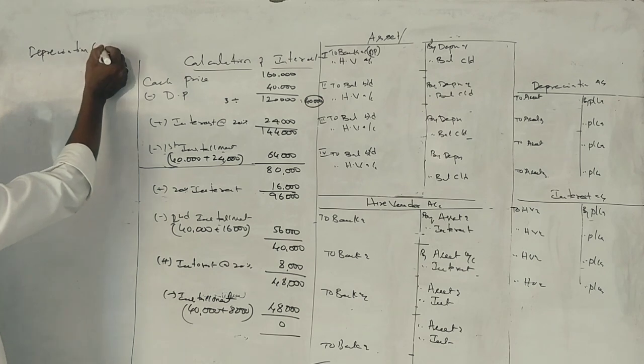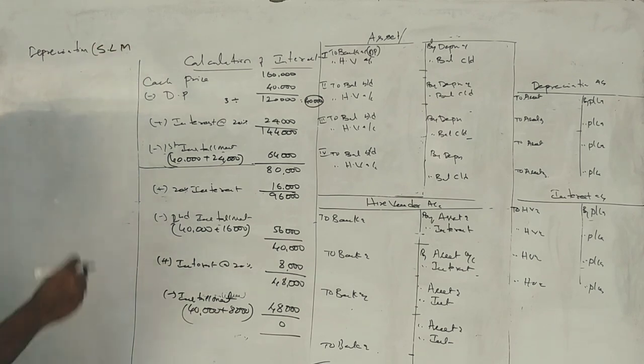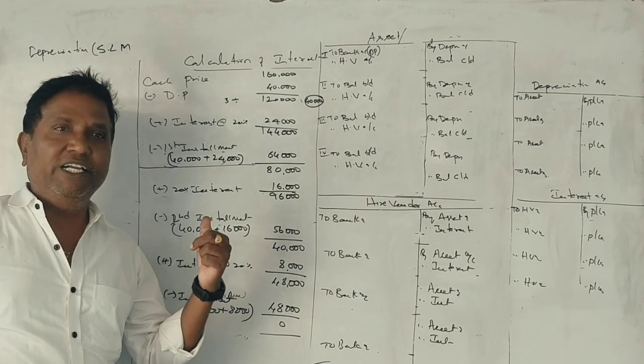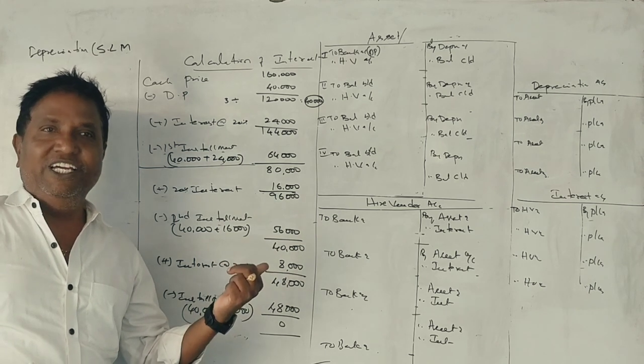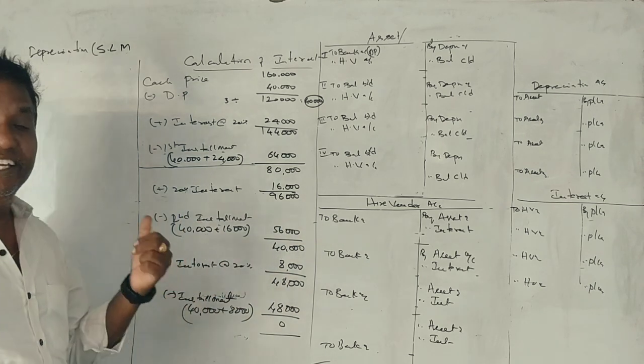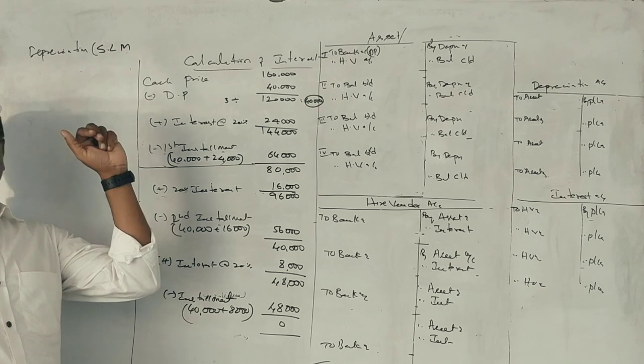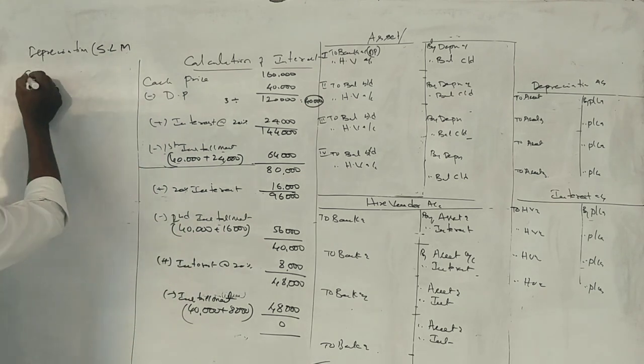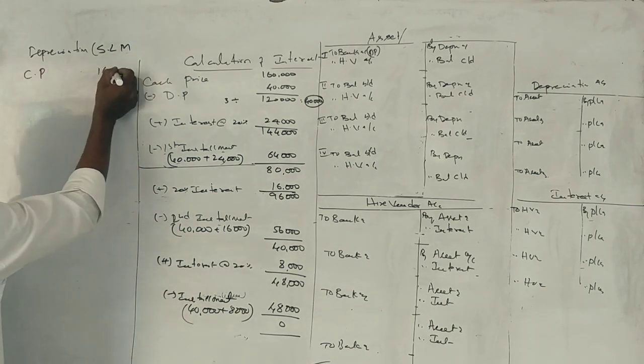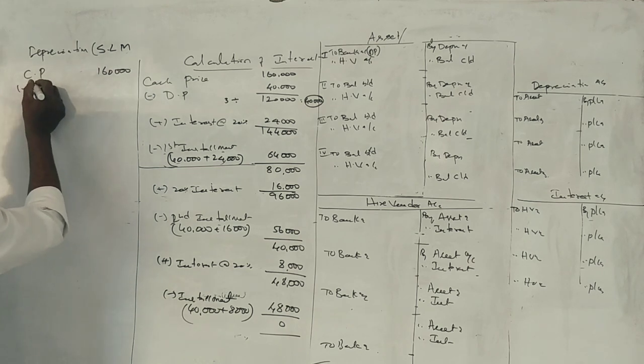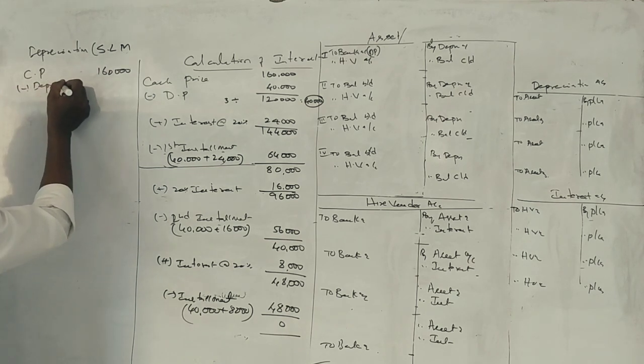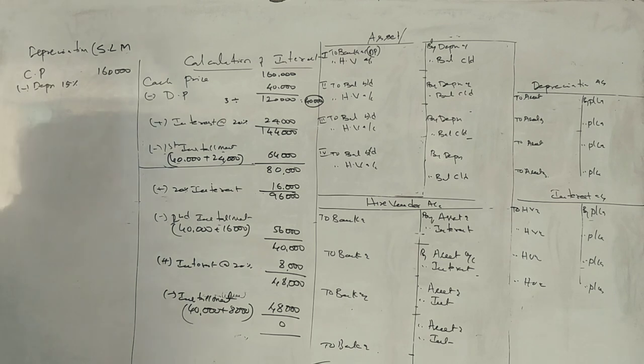Depreciation is straight line method. Diminishing value is zero. This is straight line. Cash price is 1,60,000. Depreciation is how much? 15%.